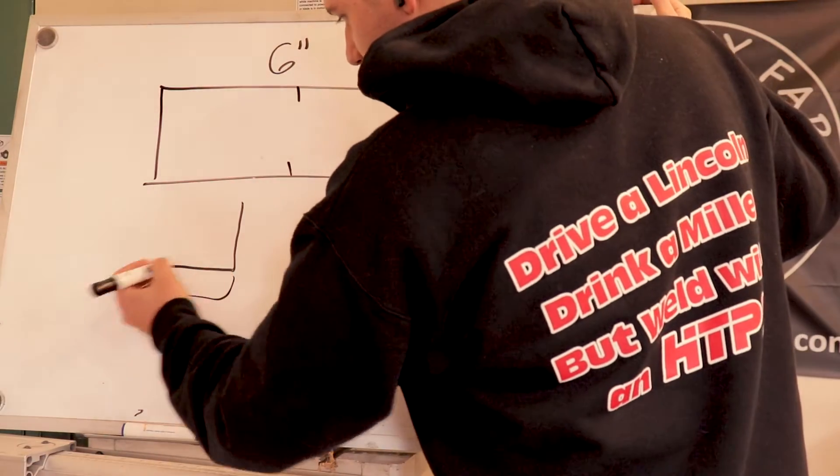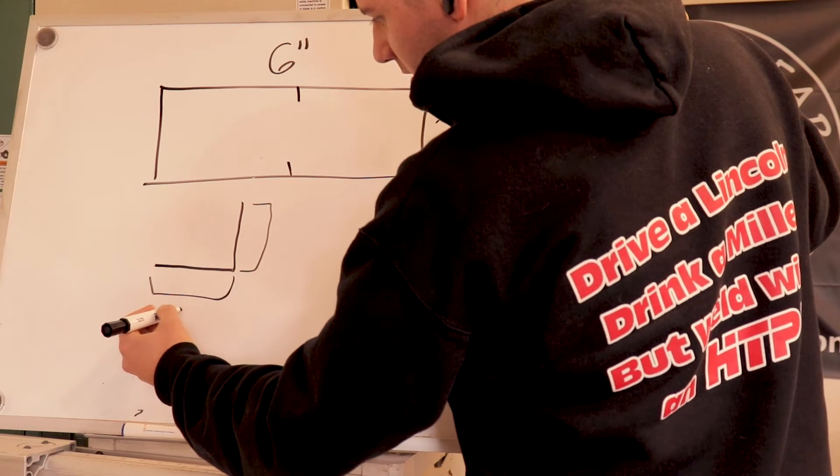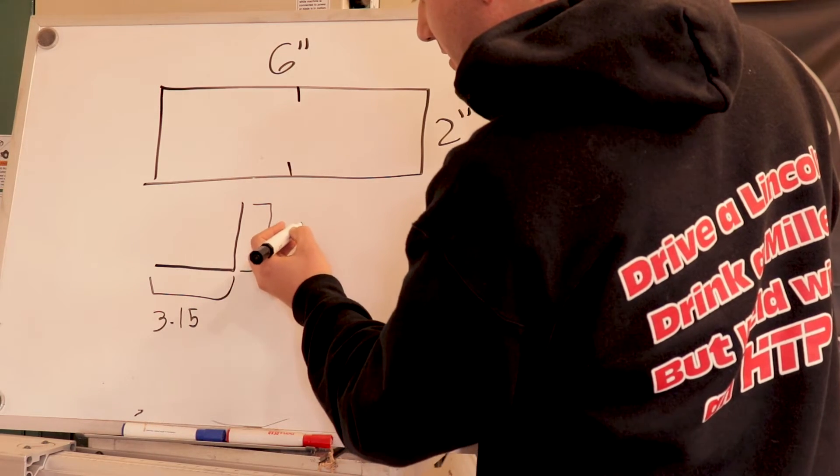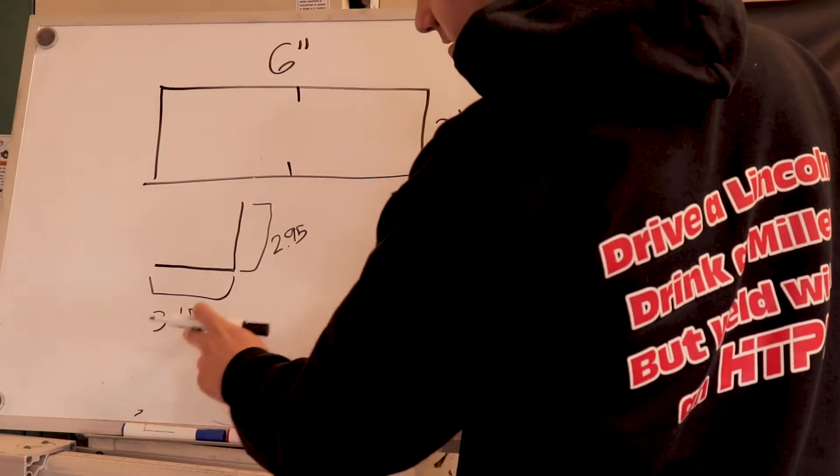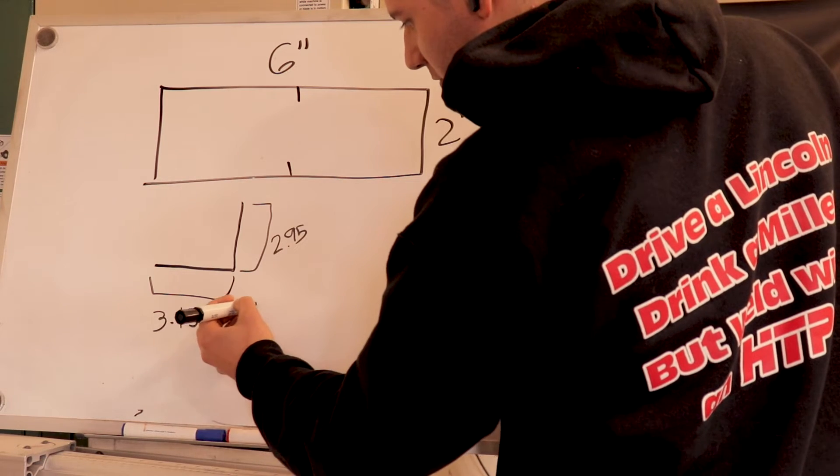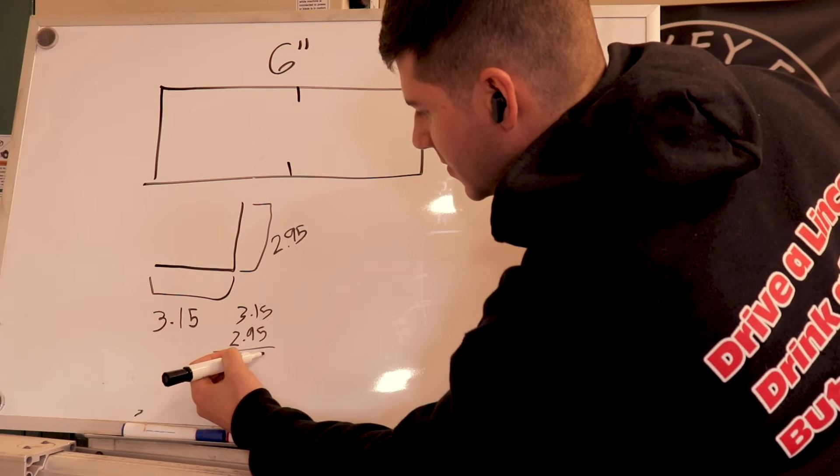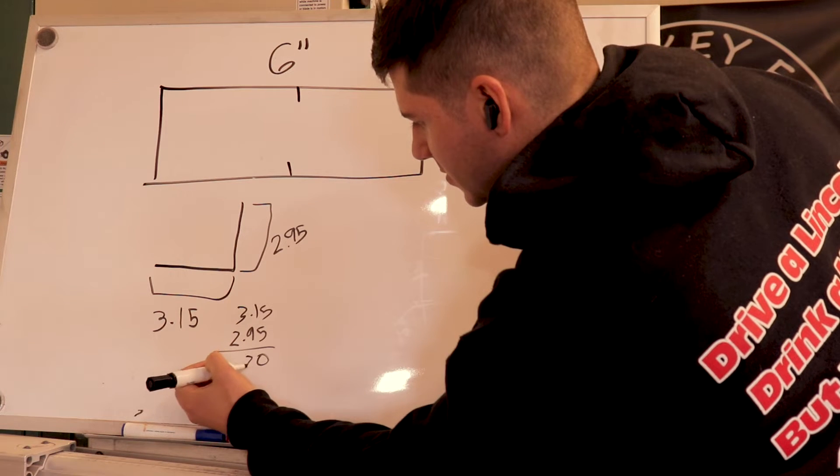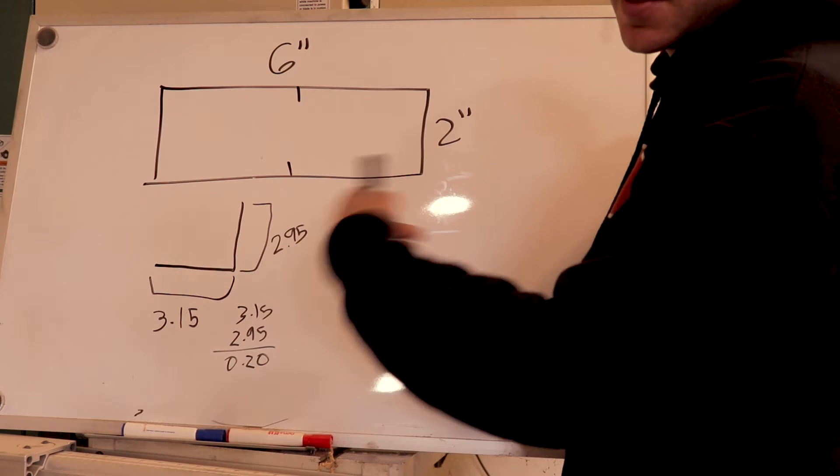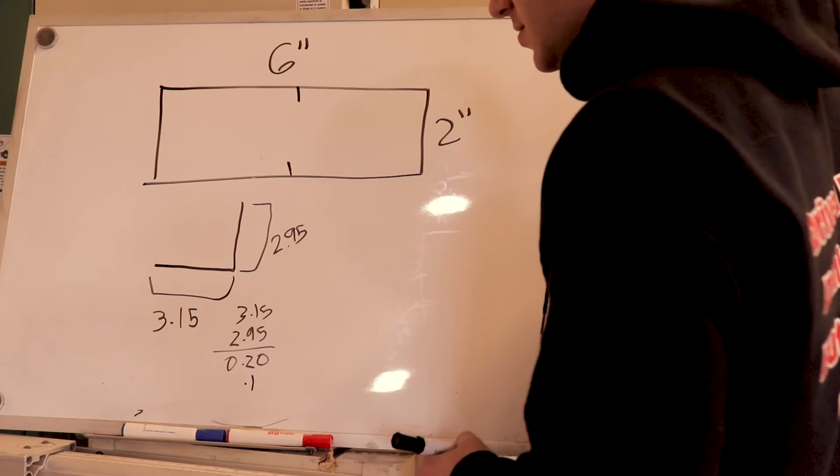Then you're going to measure these two distances. Let's just say this one is 3.15 and this one is 2.95. Now you're going to subtract this from that so you get the amount of difference between them. So 3.15 minus 2.95 is 0.2 inches of difference. It's probably not going to be this big in your actual one, I'm just making up numbers. Then once you've got this, you're going to divide that in half to be 0.1. So that's how far towards your clamping.